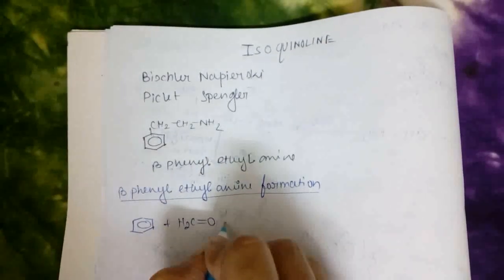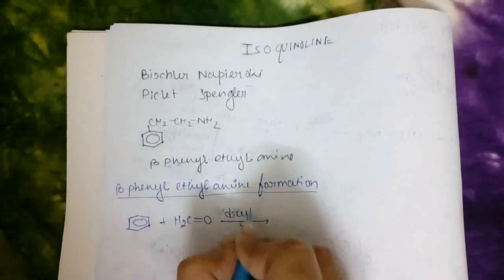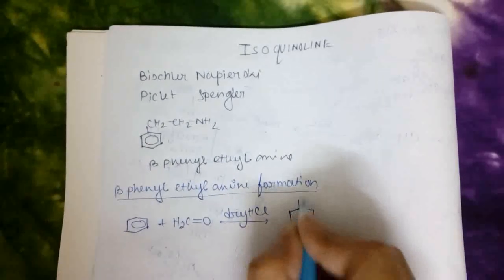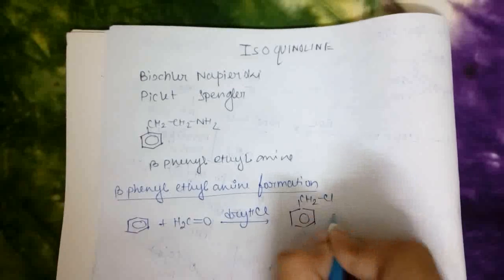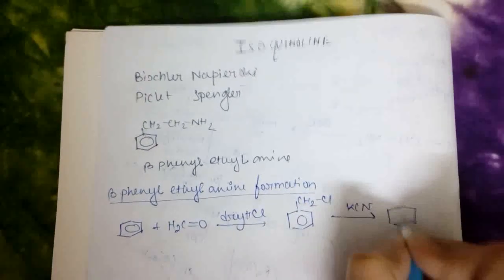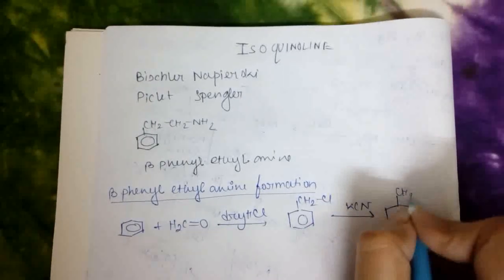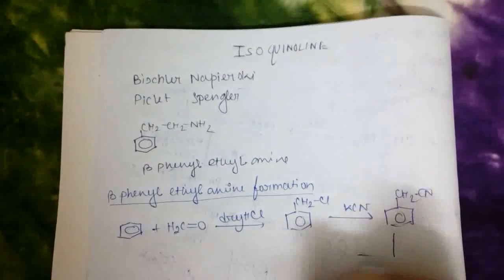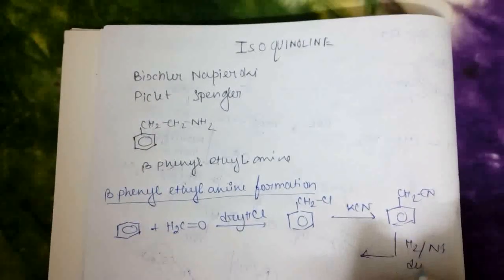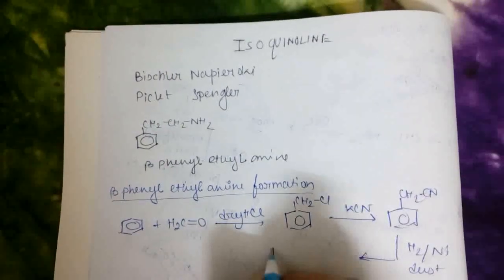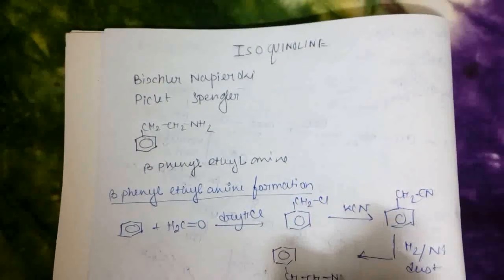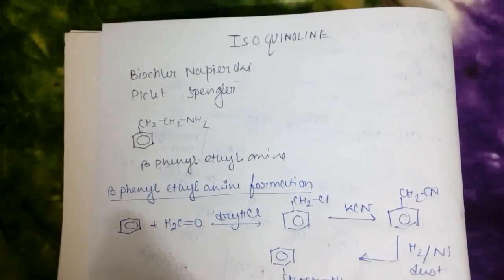formaldehyde in presence of dry HCl, and then benzyl chloride will form. This benzyl chloride by reaction with KCN, a cyanide derivative is produced, then it will reduce by H2 nickel dust and form beta phenyl ethylamine. The mechanism is